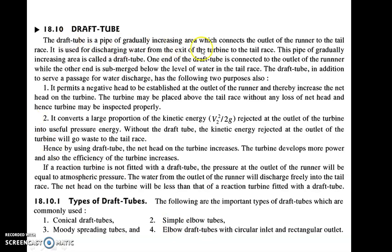The draft tube is a pipe of gradually increasing area which connects the outlet of the runner to the tailrace. It is used for discharging water from the exit of the turbine to the tailrace. Its main purposes are: it permits a negative head to be established at the outlet of the runner, thereby increasing the net head and net power of the turbine. It also converts a large portion of kinetic energy into pressure energy at the outlet. The detailed analysis of the draft tube will be covered in the next lecture.